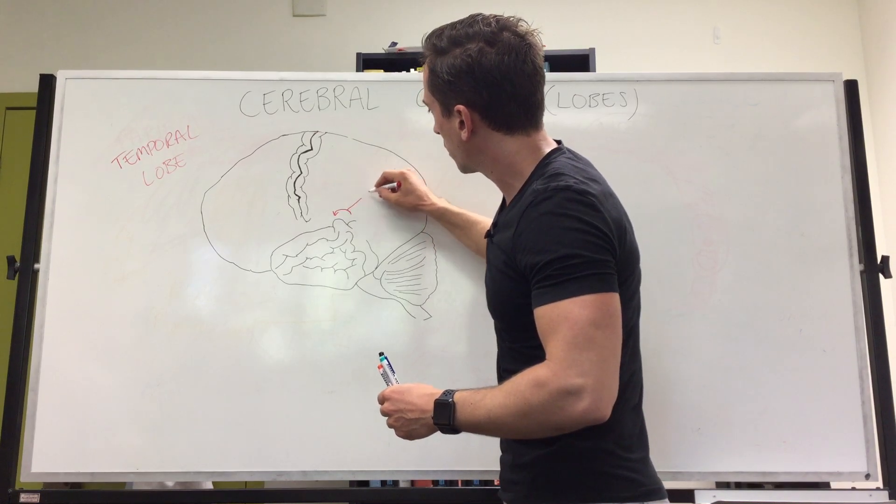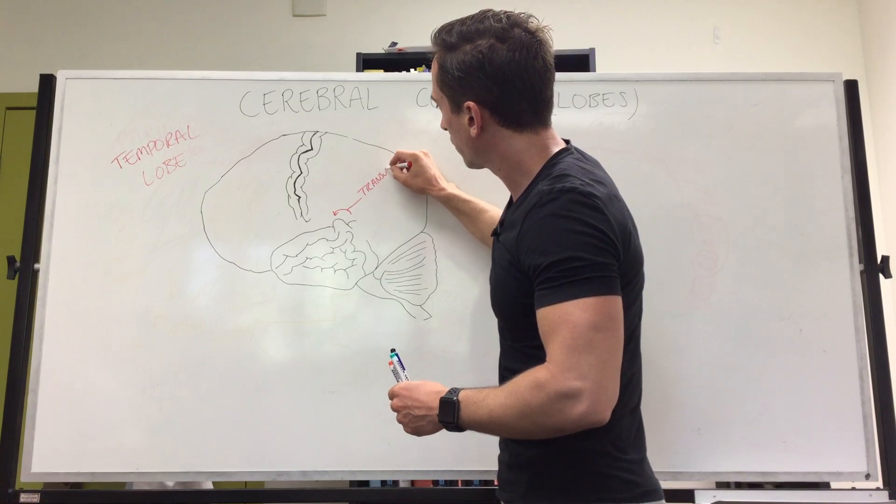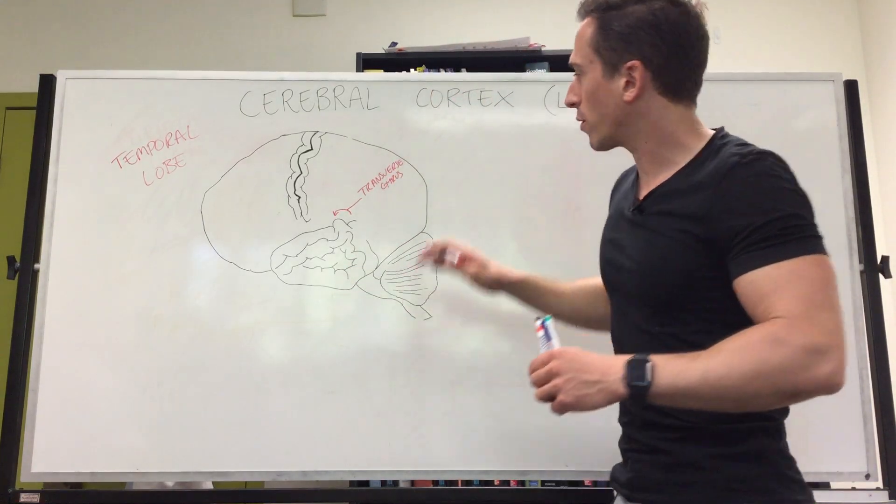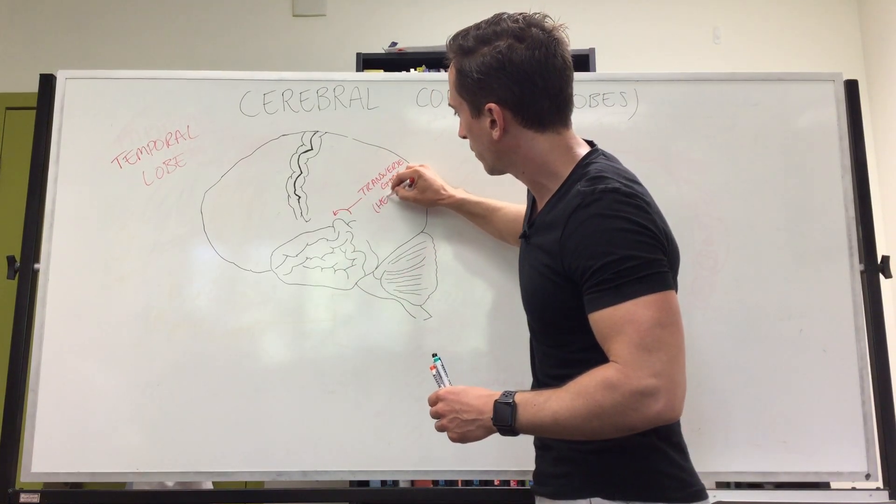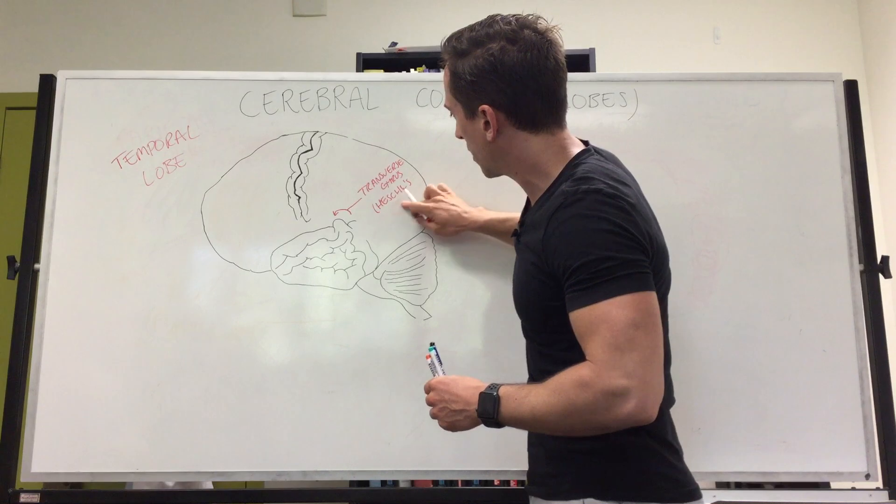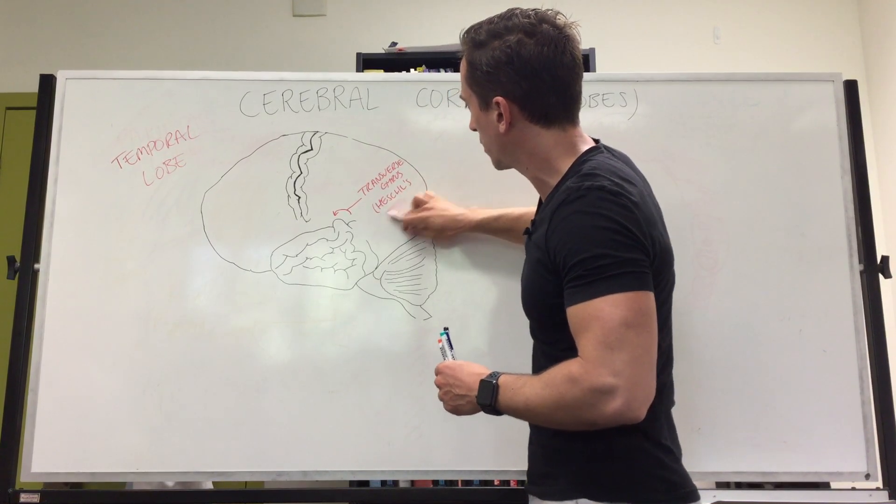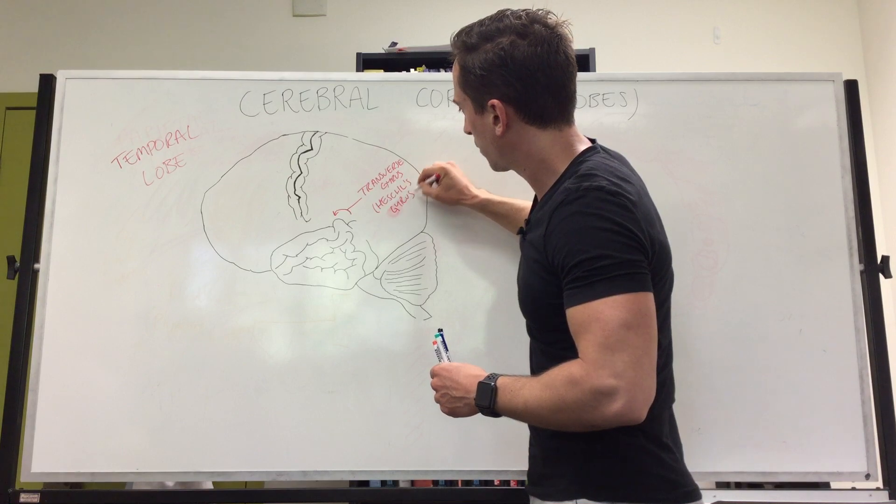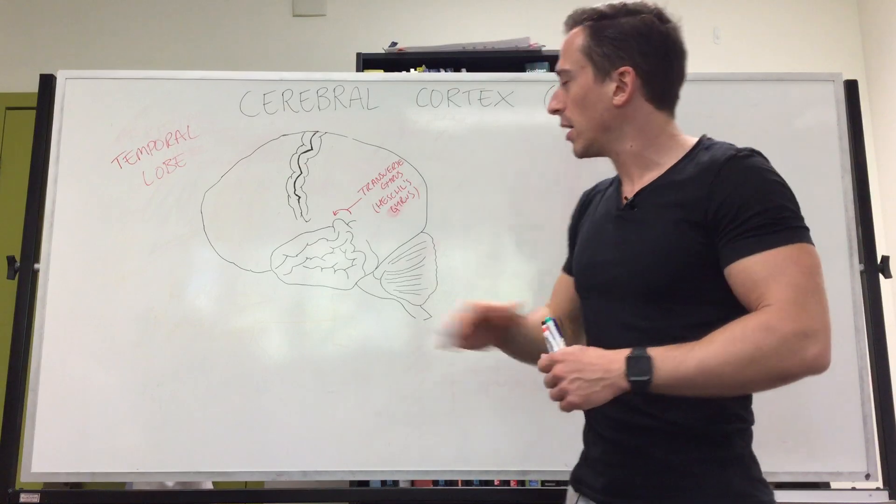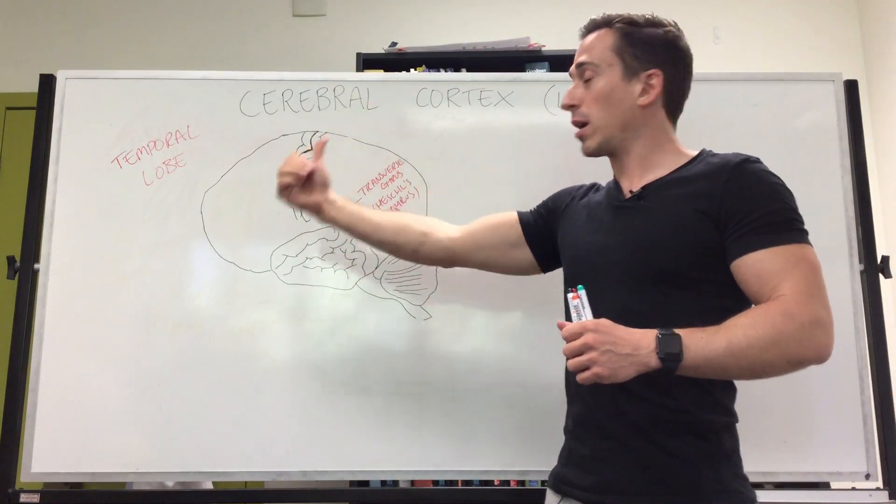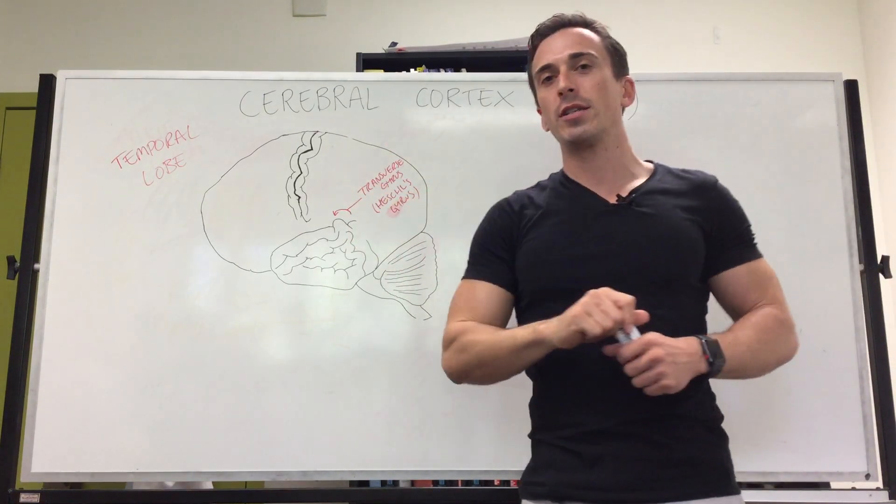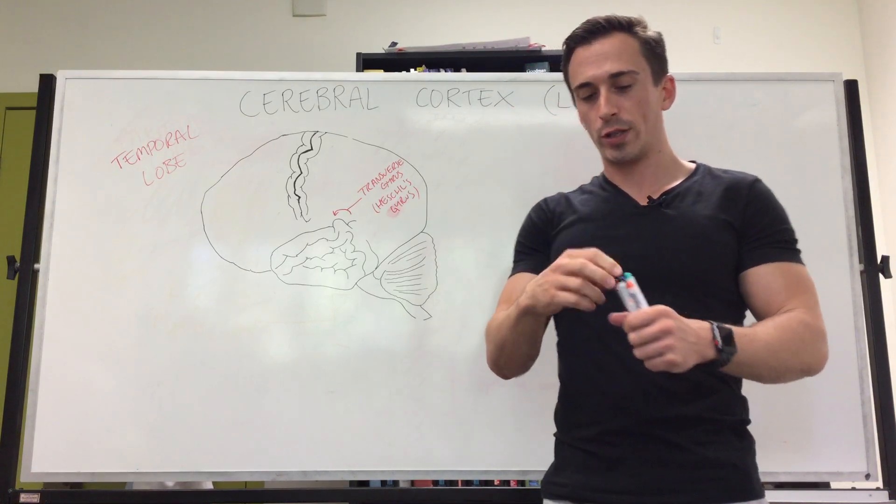The transverse gyrus is also known as Heschel's gyrus. Heschel's gyrus is located at the superior and posterior aspect of the temporal lobe, where it folds in behind as part of the transverse gyrus. Heschel's gyrus is the primary auditory cortex, which is very important.